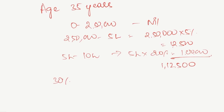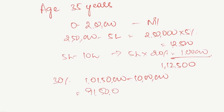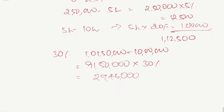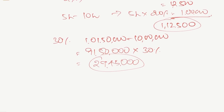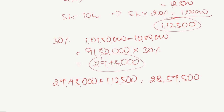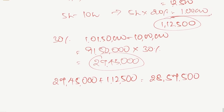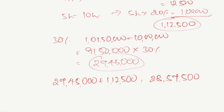For the remaining amount above 10 lakhs, the tax rate is 30%. So 1 crore 1 lakh 50,000 minus 10 lakhs = 91 lakhs 50,000. At 30%, this gives 27 lakhs 45,000. Adding the earlier 1 lakh 12,500, the total tax liability before surcharge is 28 lakhs 57,500. Since the income has exceeded 1 crore, surcharge at 15% applies.